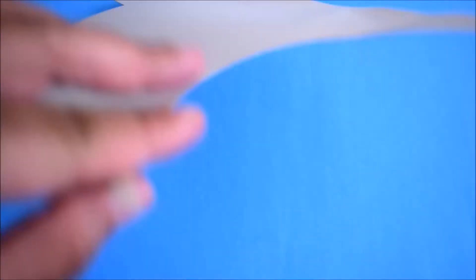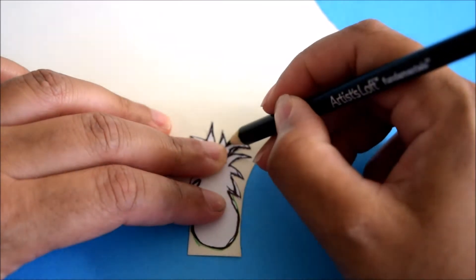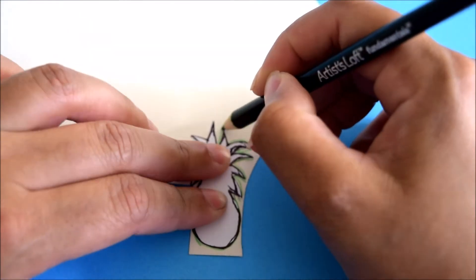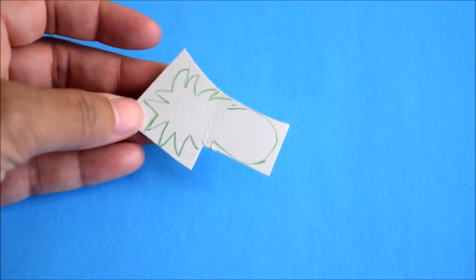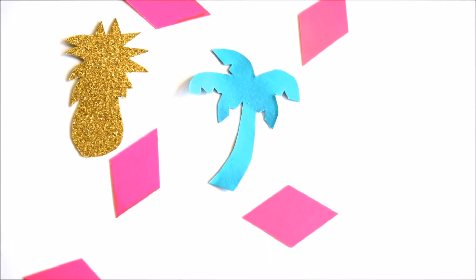Now the next one I did was a pineapple on glitter paper. This one was actually kind of hard because the glitter can be a little difficult to cut. But once again I found my pineapple by doing a regular Google search and then I just shrunk it down to size and printed it out and then I traced it onto the back of glitter paper.